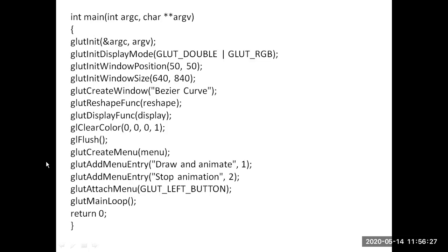In the main function, glut_init will initialize the GLUT library. glut_init_display_mode will set the mode for a double buffer and RGB color mode. glut_init_window_position specifies the window position, and glut_init_window_size sets the width and height to 640 by 840. glut_create_window creates the window and names it with 'Bezier curve'.